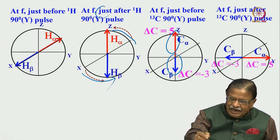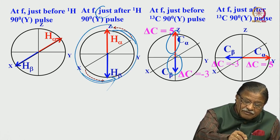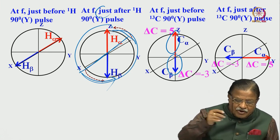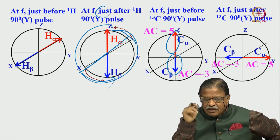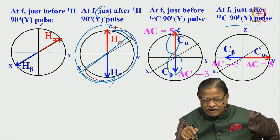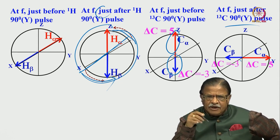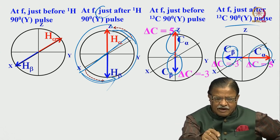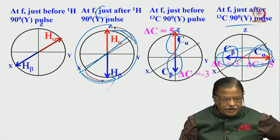What happens immediately after the 90 pulse for carbon-13? Before this, the coherence was in the xy-plane, while carbon-13 was still along the z-axis. After applying a 90 degree pulse, the spin vectors of carbon-13 are brought into the y-axis. Because coherence transfer has taken place from proton to carbon, C-beta is minus 3 and C-alpha is plus 5. From the z-axis, you bring them to minus-y and plus-y — minus 3 and plus 5.